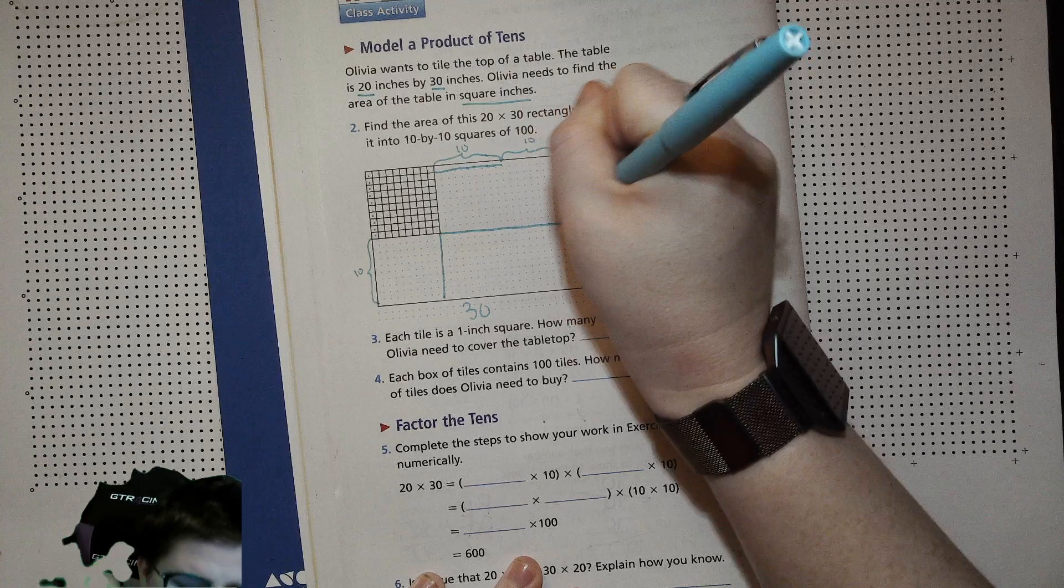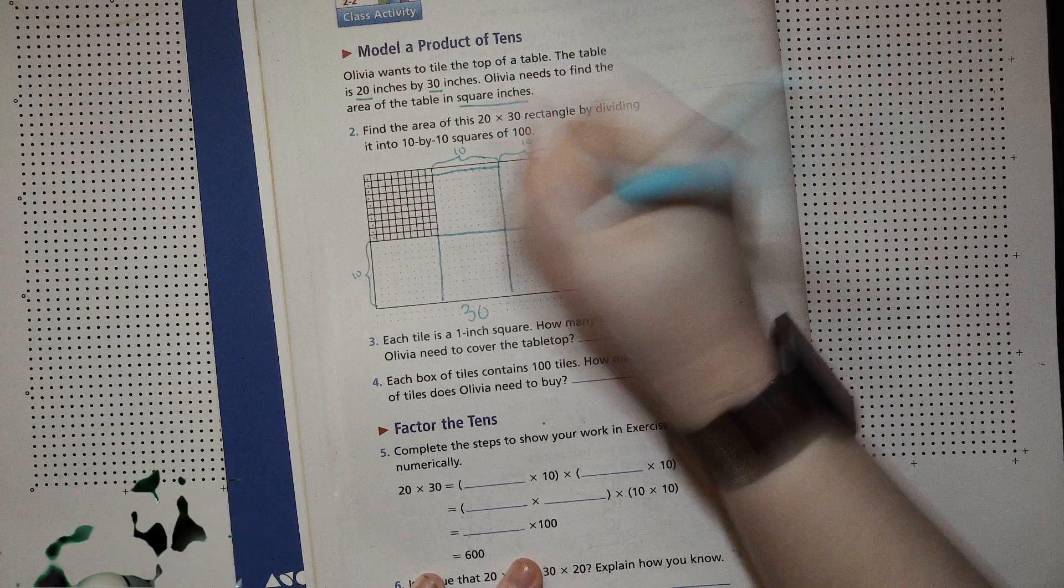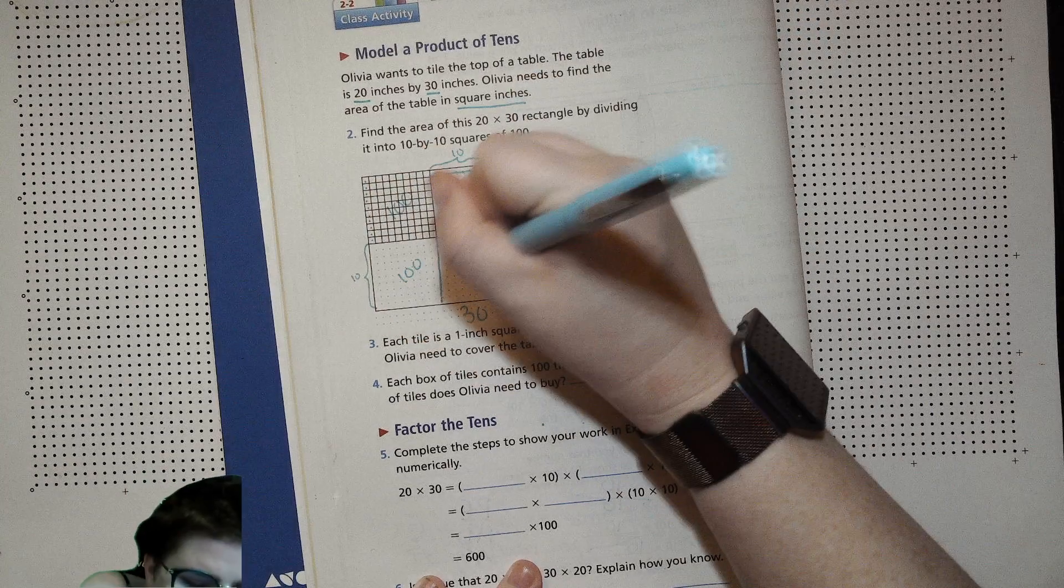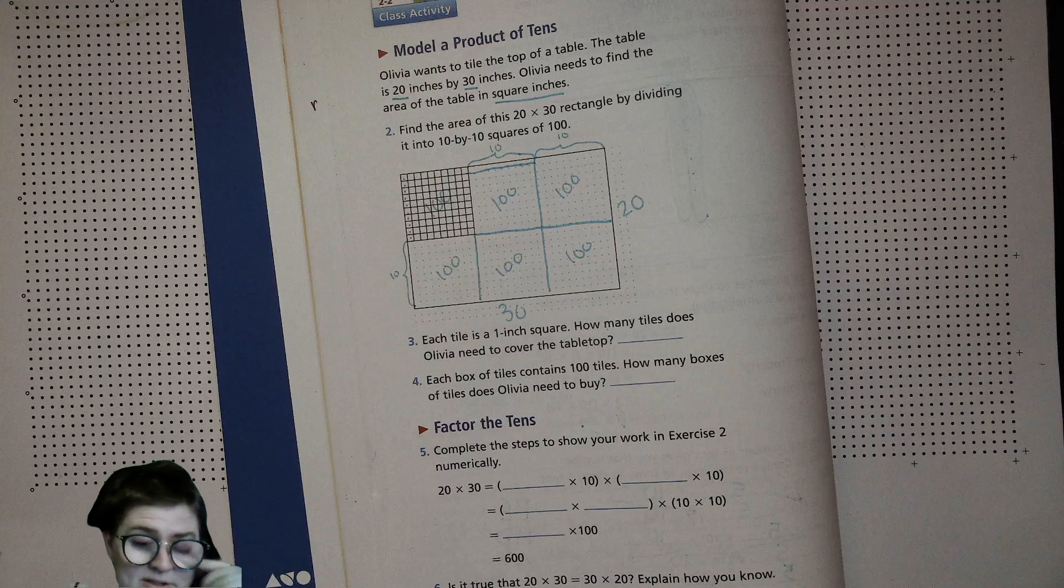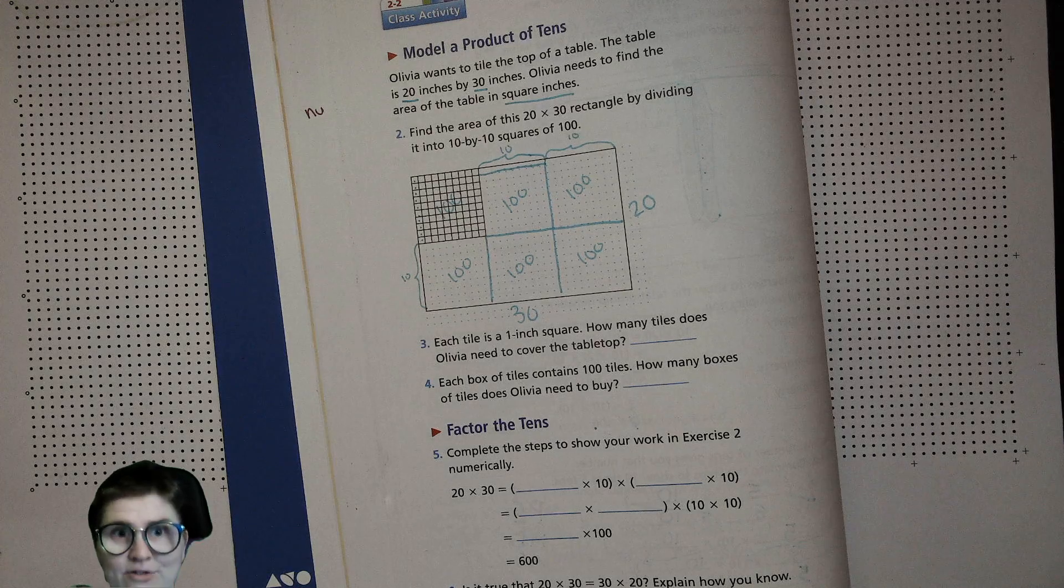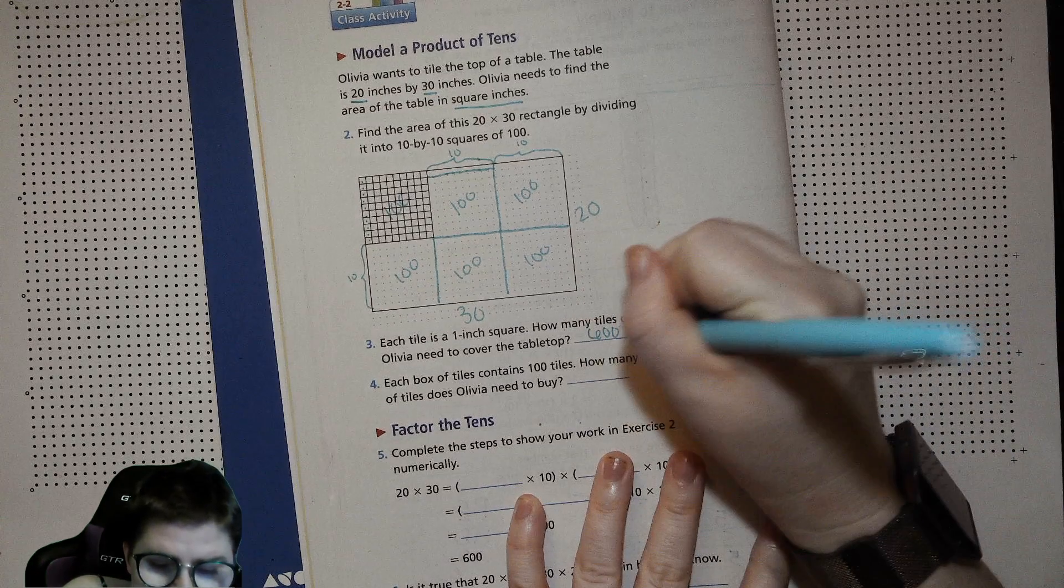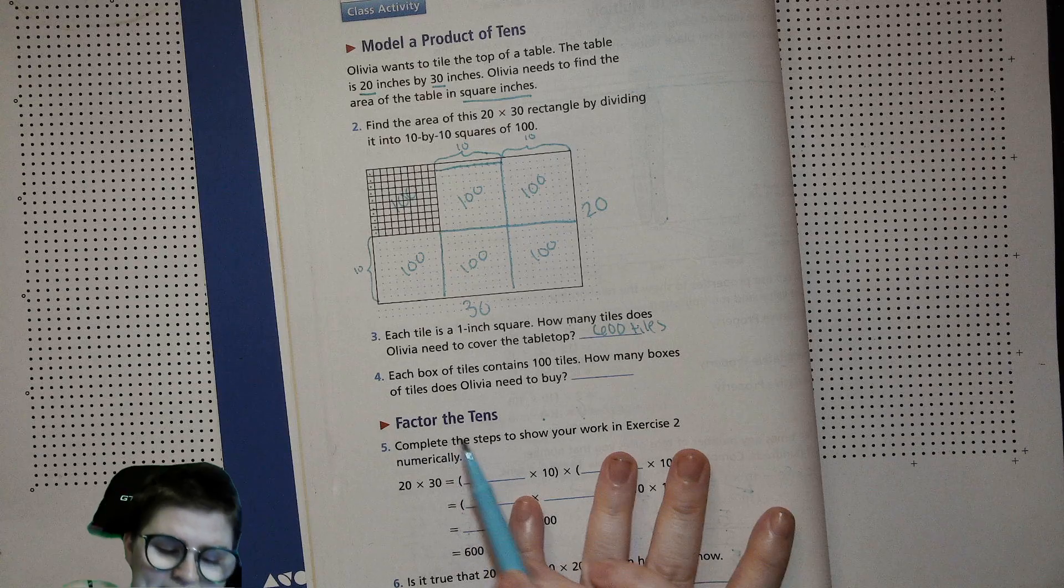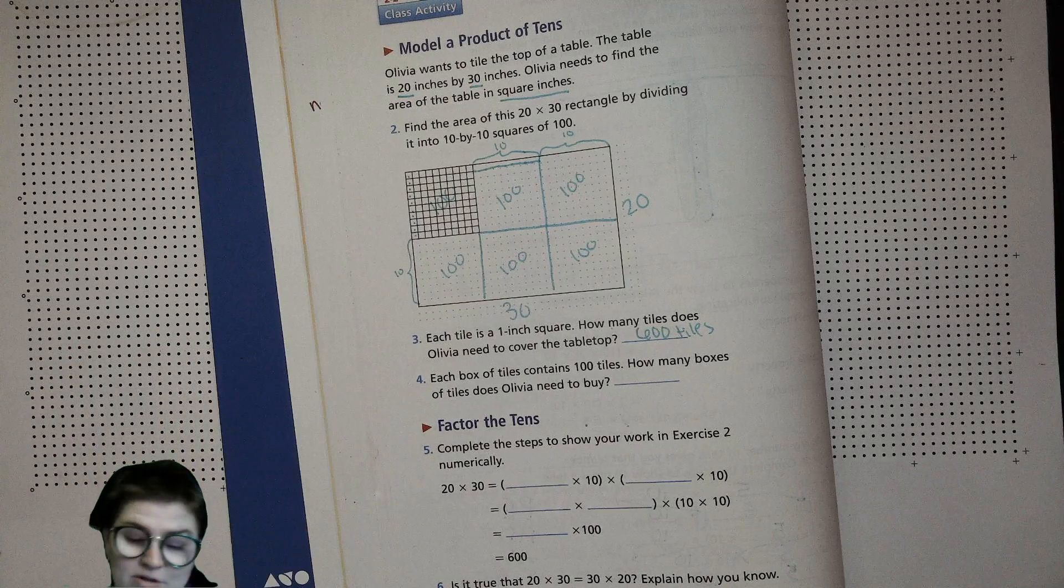Now that we know how to use our skills for getting hundreds, we're going to use those groups of 10 and count them by hundreds. So then we just have 1, 2, 3, 4, 5, 6 hundreds or 600. How many tiles does she need? She needs 600 tiles. Each box contains 100 tiles. How many boxes does Olivia need to buy? There are 6.